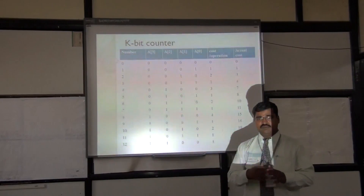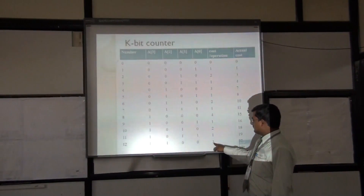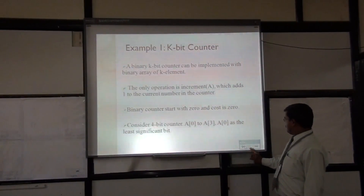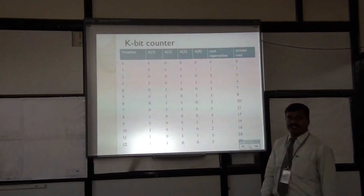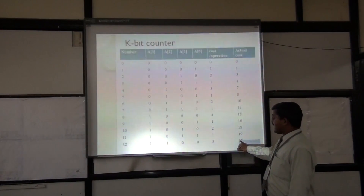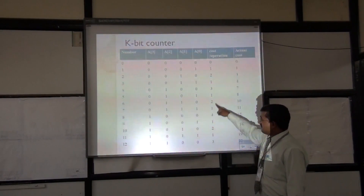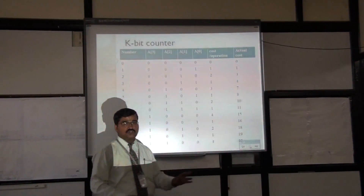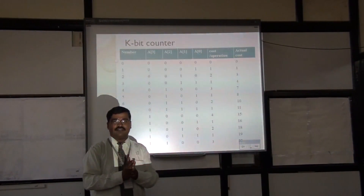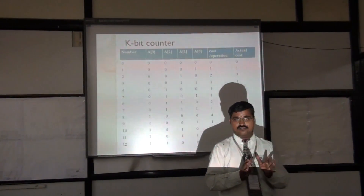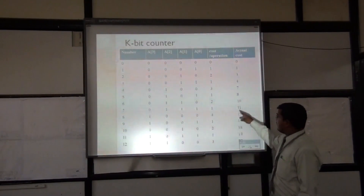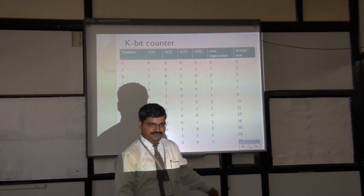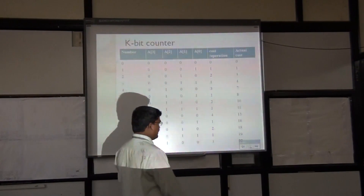In this case, I have performed n increment operations, where n equals 12. The total cost incurred is 22. But if you analyze this as a worst case analysis, the highest cost for any single operation is 4. So 12 times 4 gives 48 — the worst case analysis calculates a cost of 48. But the actual cost is much less than 48; it is 22. This is what the amortized analysis demonstrates.